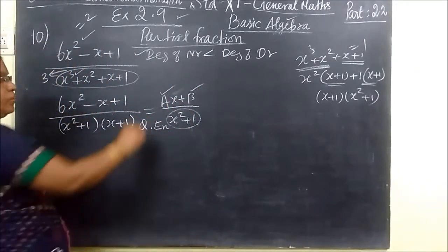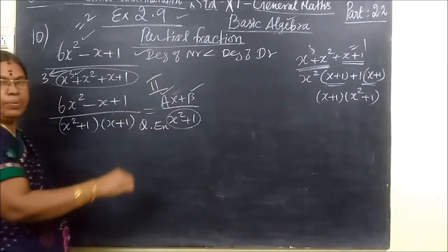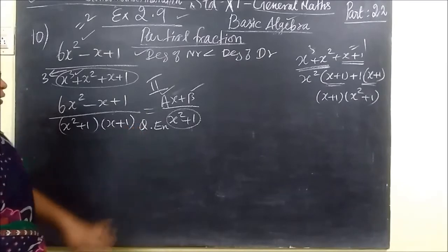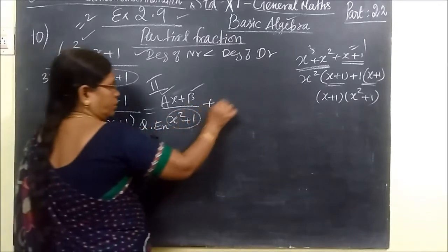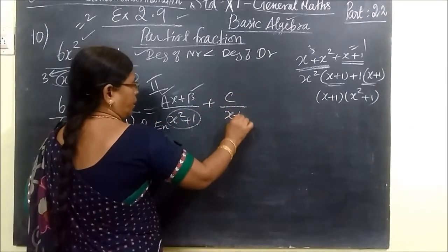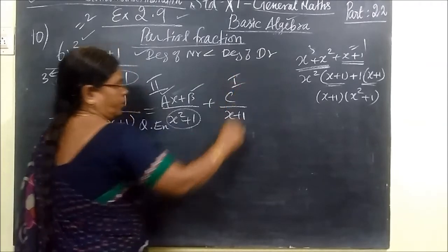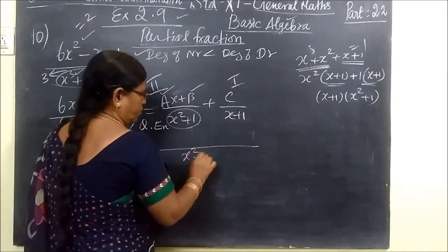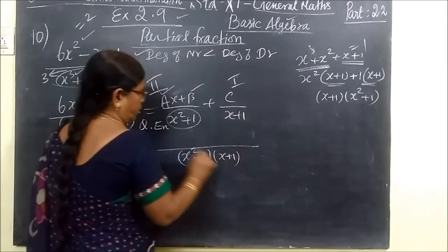In the method, this is type 2. Then C by x plus 1. This is type 1. Now you take the LCM, x² plus 1, then x plus 1. You just cross multiply.